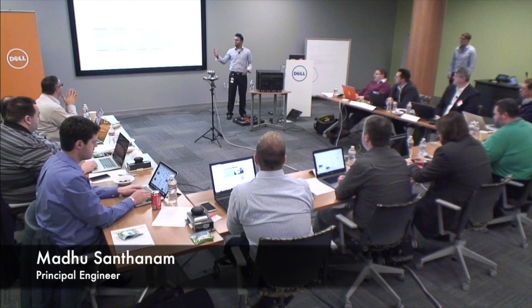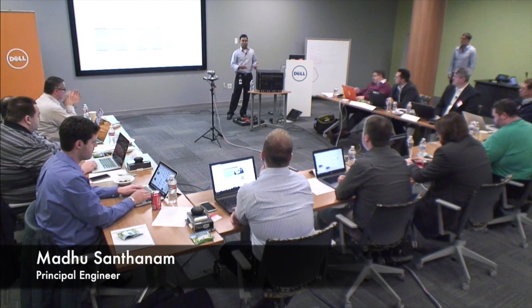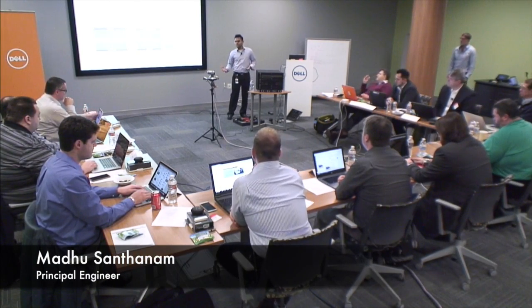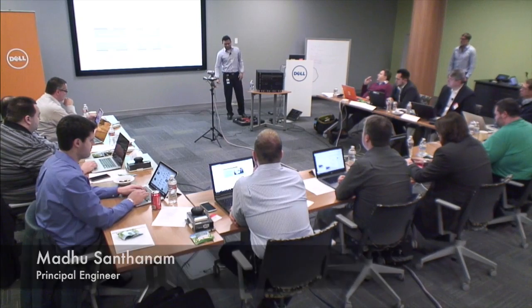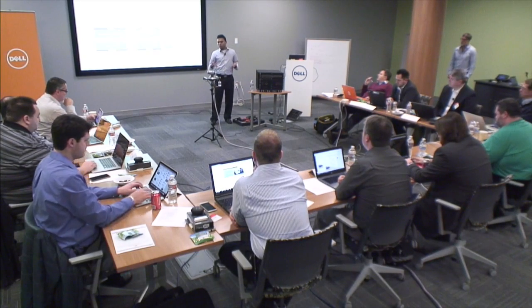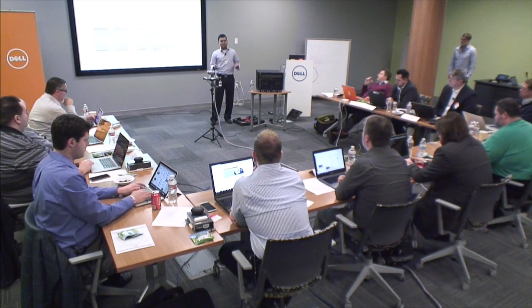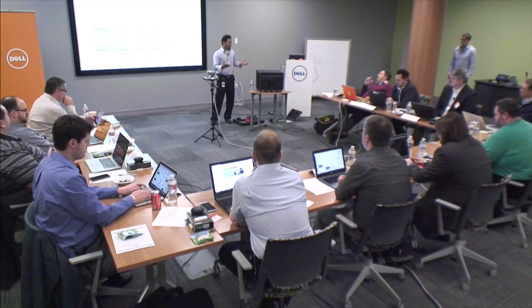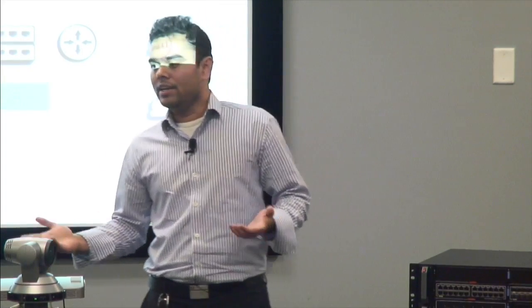I'm going to talk about FIB optimization on WAN edge routers. If you take a typical WAN network design, you have multiple WAN edge routers connecting upstream to your ISPs that are providing the internet transit service connectivity, and potentially some connectivity out to your peering service.